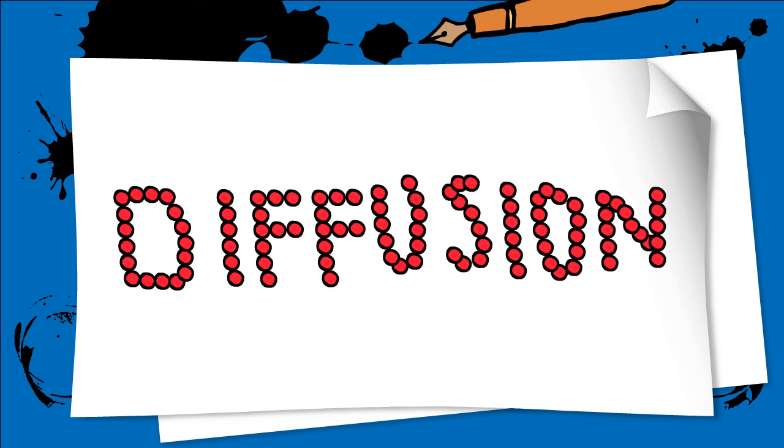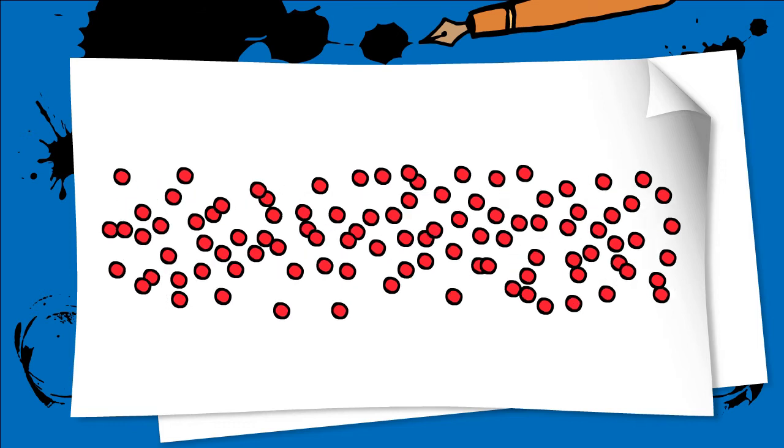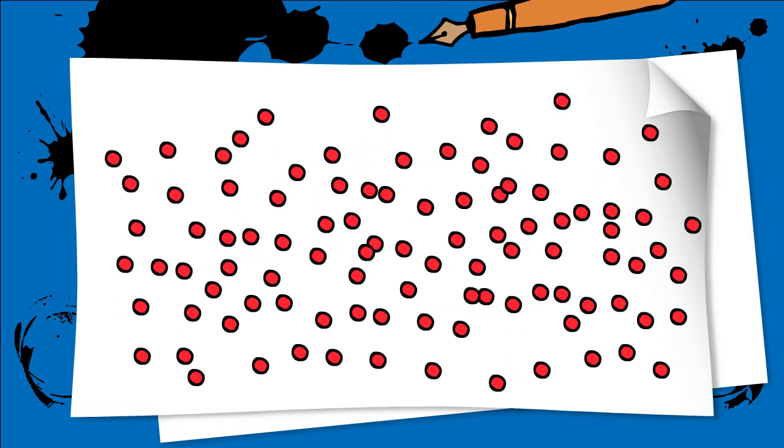Diffusion describes how particles intermingle and move from areas of high concentration to low concentration, like the particles spreading out on the screen.